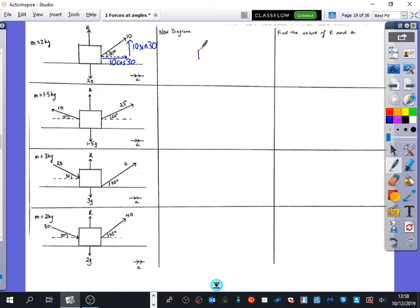So then when you do your new diagram, this time our new diagram will have R going upwards. It will have 10 sine 30 going upwards. It will have 10 cos 30 going to the right. And downwards, it has 2g. Now, I can't remember who this was. Someone said to me, oh, the value of R is just the weight. But the value of... But it can't be. 10 sine 30 and both.